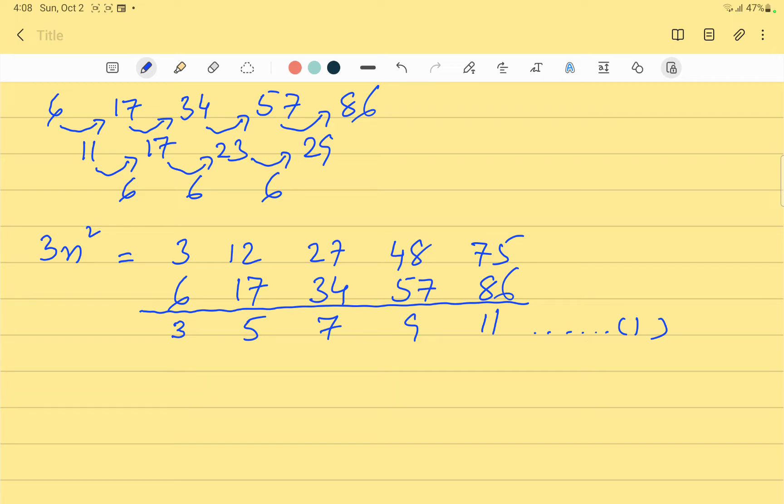Since the differences are still not the same, we will go to the next step and take the differences again. 5 minus 3 is 2, 7 minus 5 is 2, 9 minus 7 is 2, and 11 minus 9 is 2.